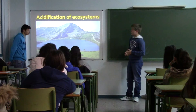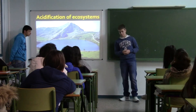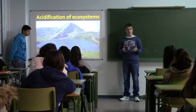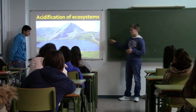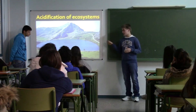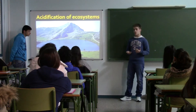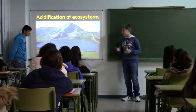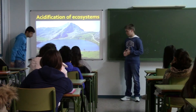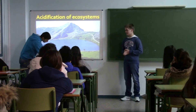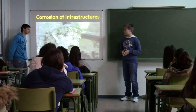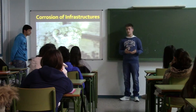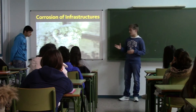First, the acidification of ecosystems. The pH of acid rain, as we know, is very low, and when it contacts with water in aquatic environments the pH of the water gets lower. This means that many species cannot survive in those conditions.